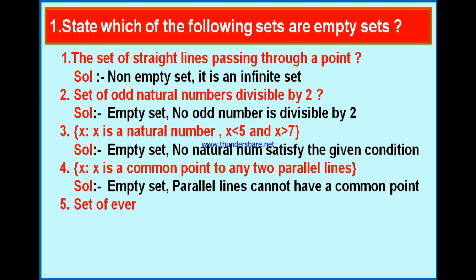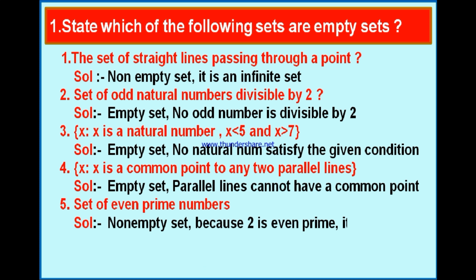Bit 5: the set of even prime numbers. Prime numbers start from 2, 3, 5, 7, 11, 13, 17 — all are prime numbers, but except 2, all remaining are odd. Therefore, there is one even prime which is 2. This set contains only one element, 2. Since there is an element, it is not an empty set — it is a non-empty singleton set.